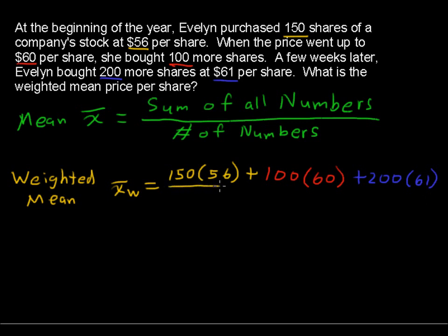Now that is going to be divided by the number of numbers, or the number of stock shares that Evelyn has. So what we have here is 150, 100, and 200 shares. This total number of numbers is 150 plus 100 plus 200, which is a total of 450.